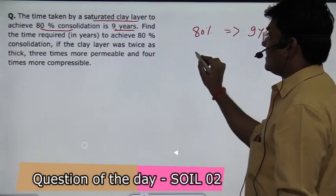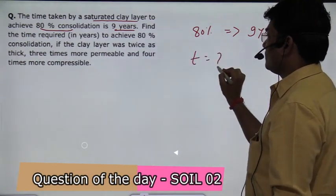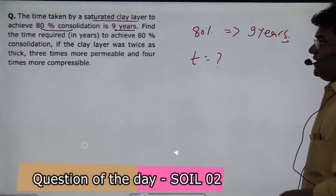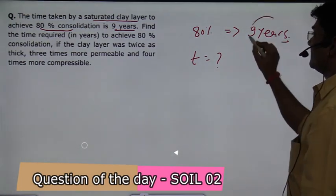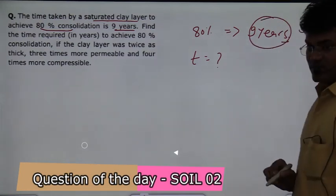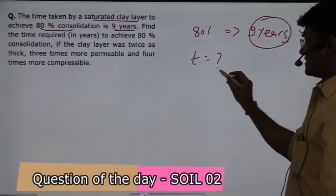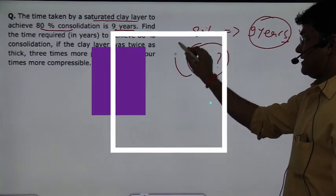Find the time required to achieve 80% consolidation. How much time will it be? But the condition is slightly differing. The first condition was 9 years. Now the condition will change, and then you will find the time for 80% consolidation.